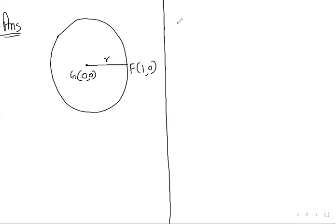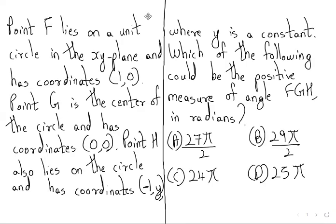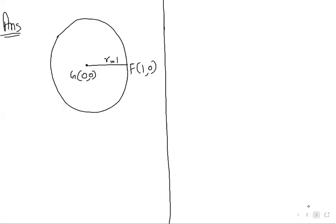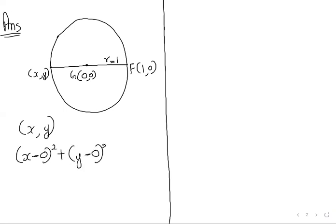So the radius equals 1. The other point, H, also lies on the circle and has coordinates (-1, Y) where Y is a constant. Let's use the distance formula to find Y. Assuming a general point (X, Y) on the circle with center (0, 0), the distance formula gives: (X − 0)² + (Y − 0)² = R². That simplifies to X² + Y² = R², and since R = 1, we get X² + Y² = 1.